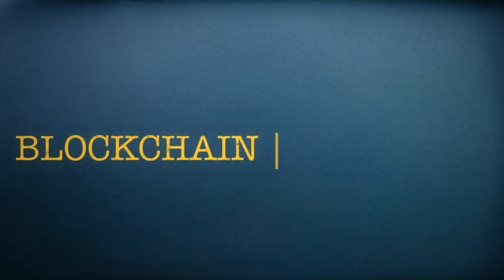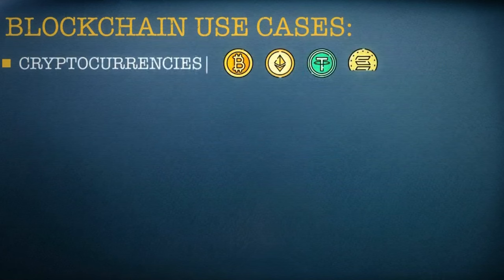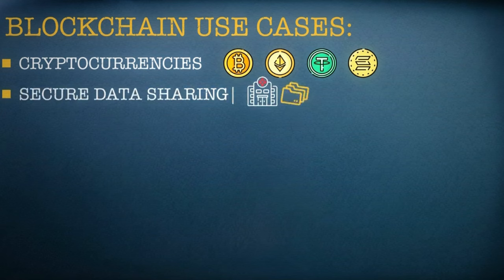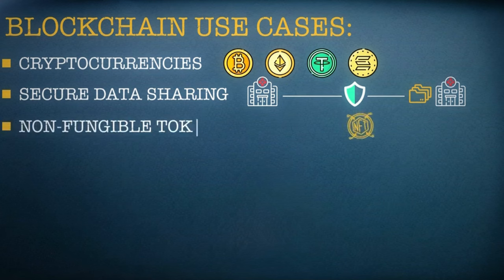Blockchains have countless other uses aside from cryptocurrencies. For example, they can help ensure that sensitive data, such as medical records, can be shared securely. These tamper-proof databases are also useful for recording other forms of information, such as who owns a non-fungible token.